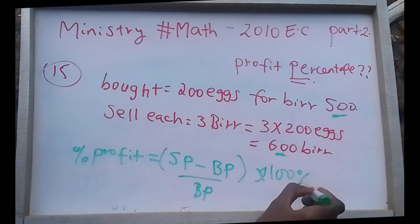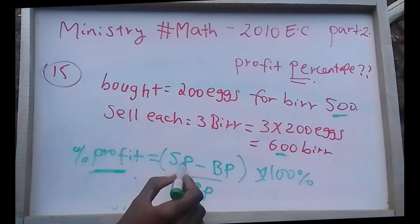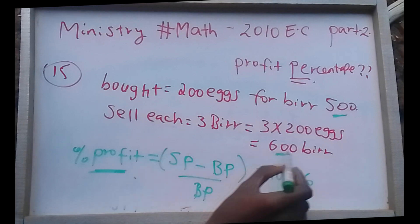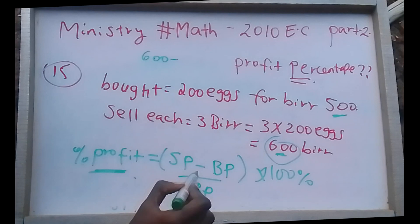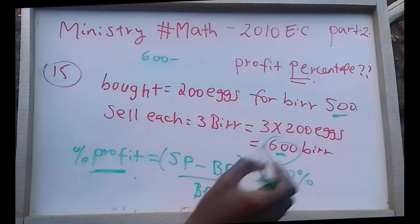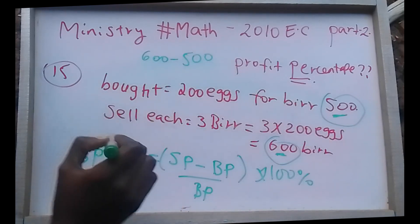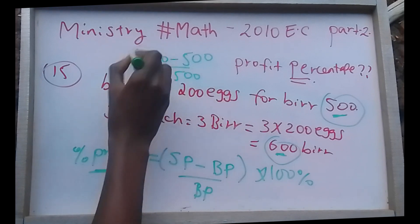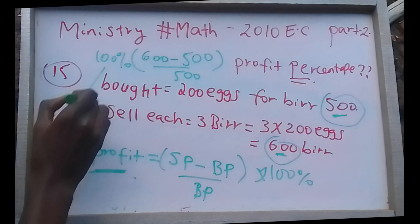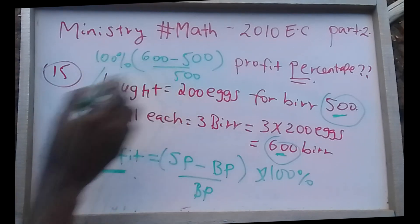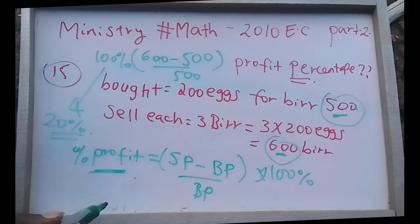Using the profit percentage formula: the selling price action of a total. This gives us a value of 20 percent.